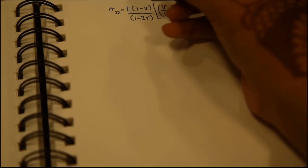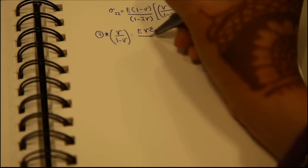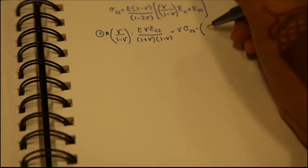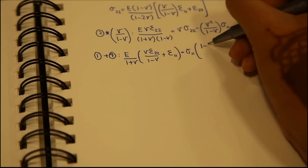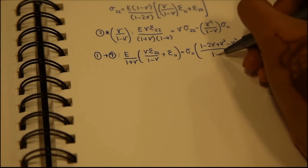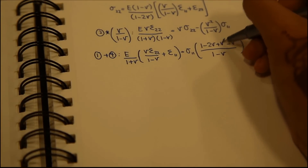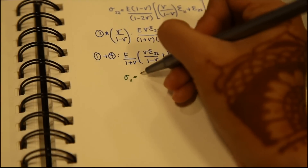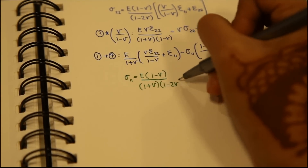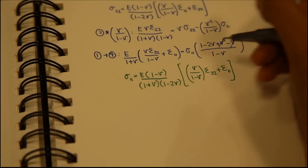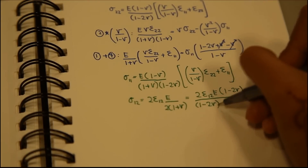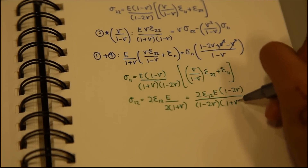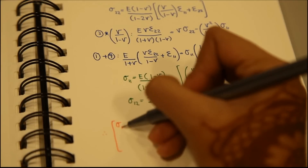Proceeding the same way, we find epsilon 2,2 by multiplying the second equation by mu divided by (1 minus mu). Adding the fourth equation and the first equation, we get epsilon 2,2 and epsilon 1,1 in terms of sigma 1,1. This gives us two new sets of equations for sigma 1,1 and sigma 1,2. Adding all equations for sigma 1,1, sigma 1,2, and sigma 2,2, we get the elasticity tensor matrix.